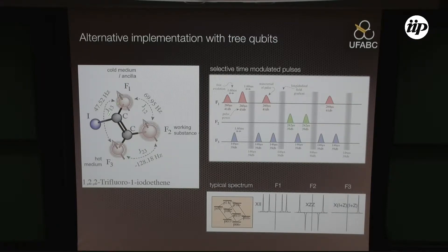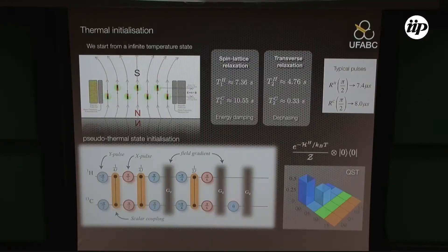We can also play with other kinds of molecules. We played with a three-fluorine molecule, where three fluorines play the role of qubits and we modulate pulses in a special way to manipulate them. We can also play with molecules with four qubits and so on.